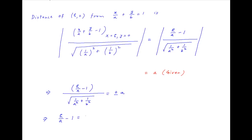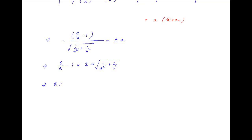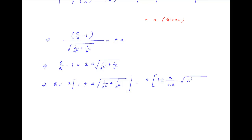Therefore, h upon a minus 1 equals plus or minus a times the square root of 1 upon a squared plus 1 upon b squared. This implies that h equals a times the bracket 1 plus or minus a times the square root of 1 upon a squared plus 1 upon b squared, which equals a times the bracket 1 plus or minus the square root of a squared plus b squared, and can be written as a upon b times the bracket b plus or minus the square root of a squared plus b squared.